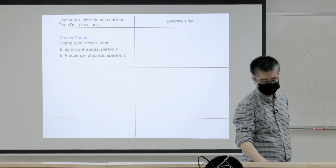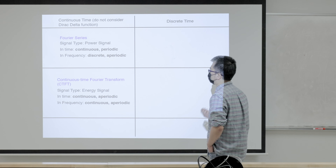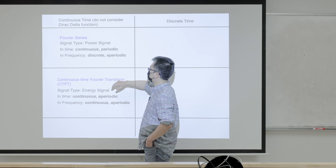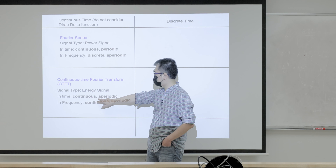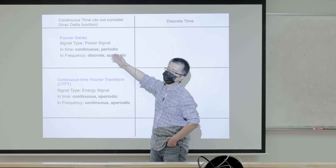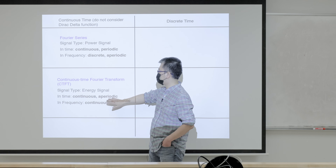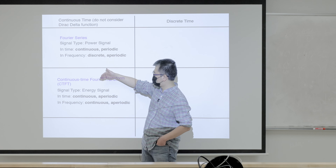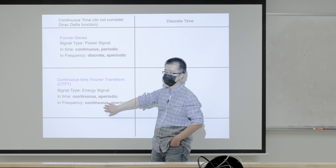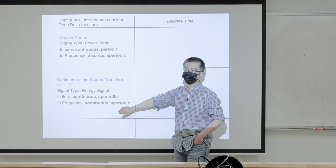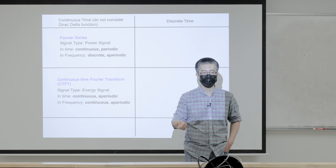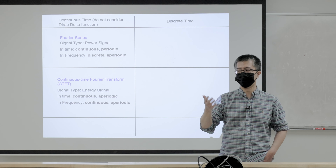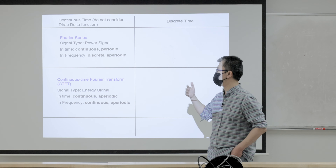We then introduced the continuous time Fourier transform, CTFT. We derived this from the Fourier series by considering continuous time aperiodic signals — letting the period go to infinity and considering only energy signals. In the frequency domain the CTFT is also continuous and aperiodic. Both time and frequency domains are continuous and aperiodic for CTFT.